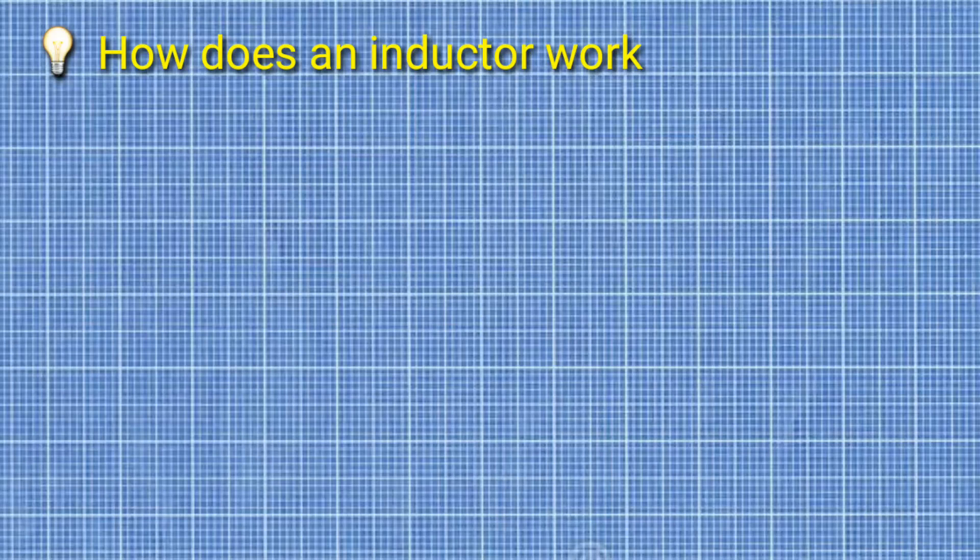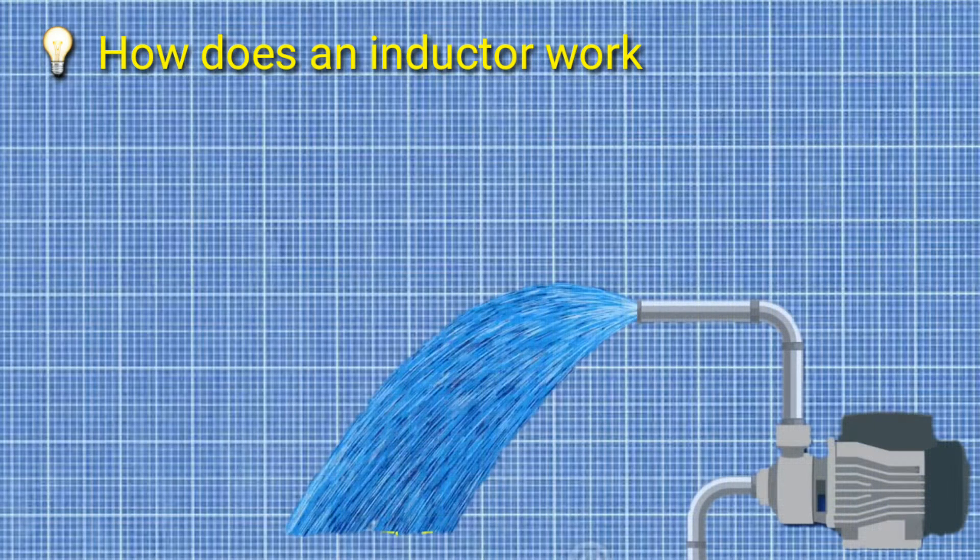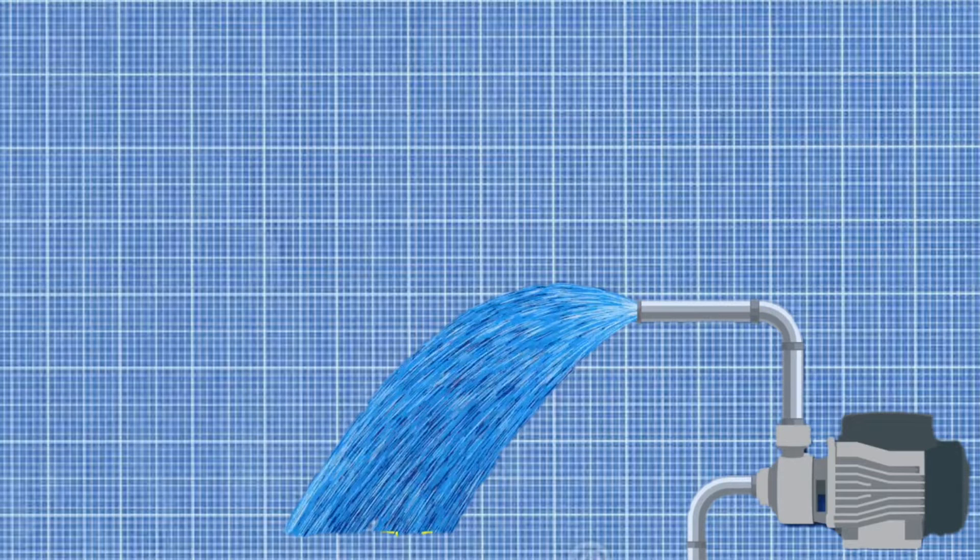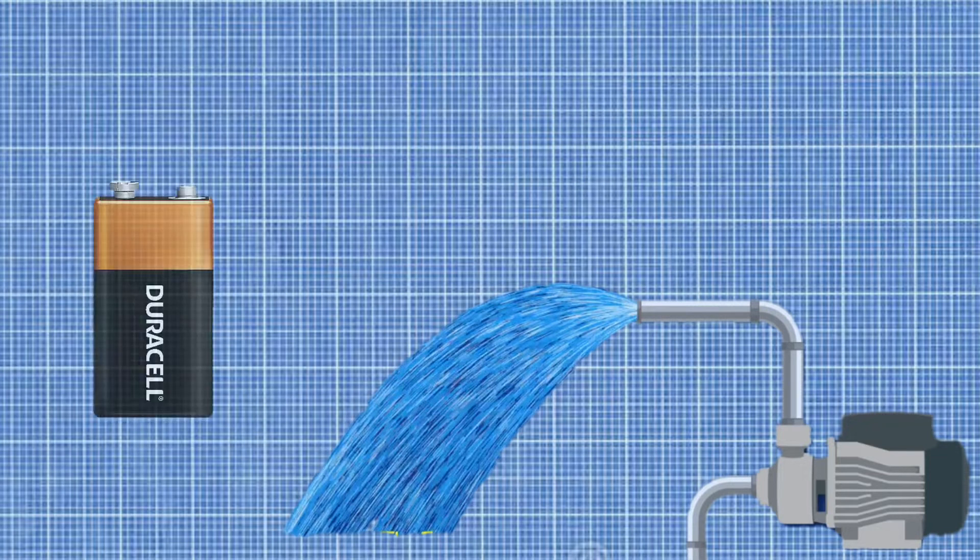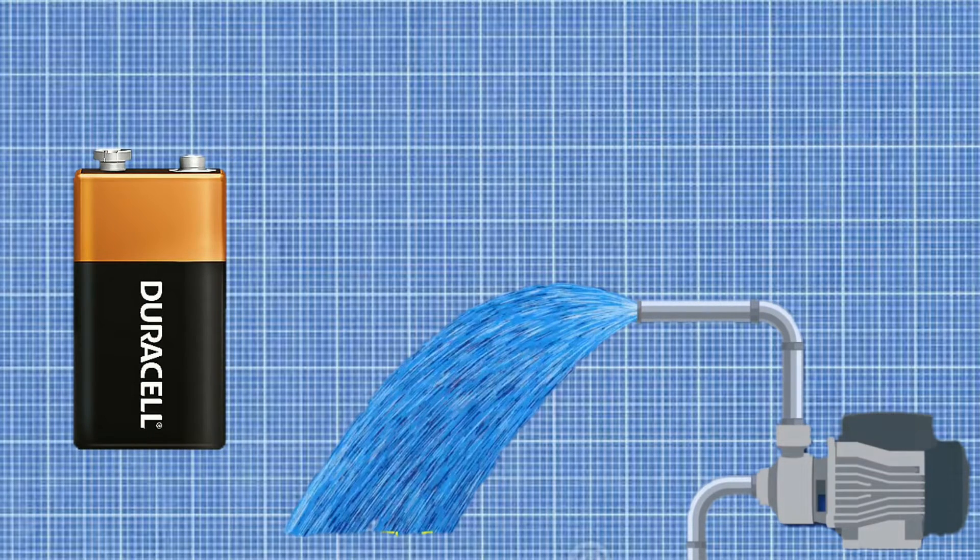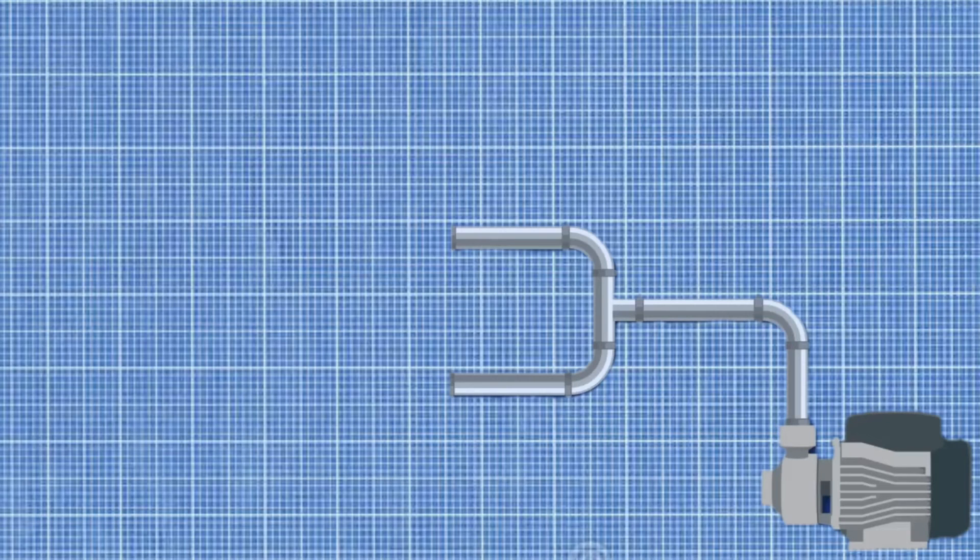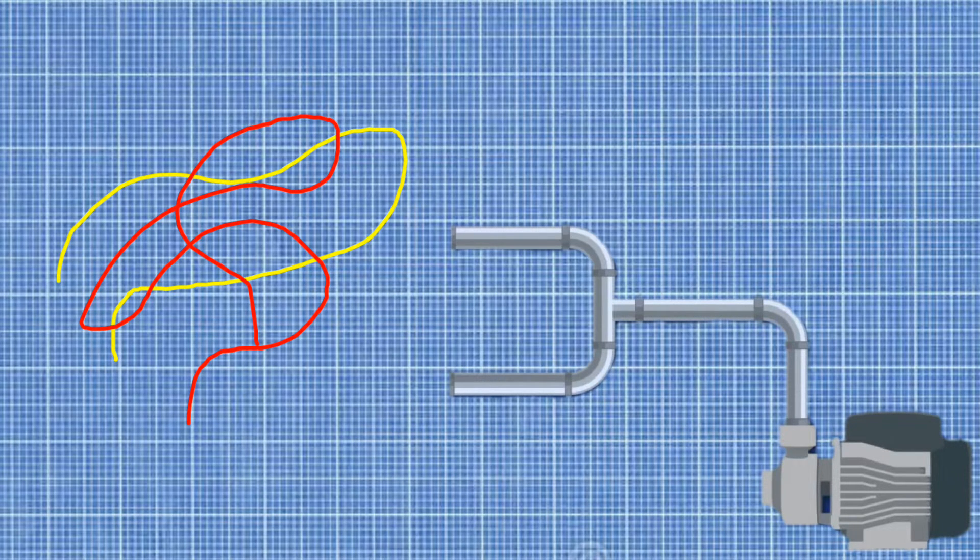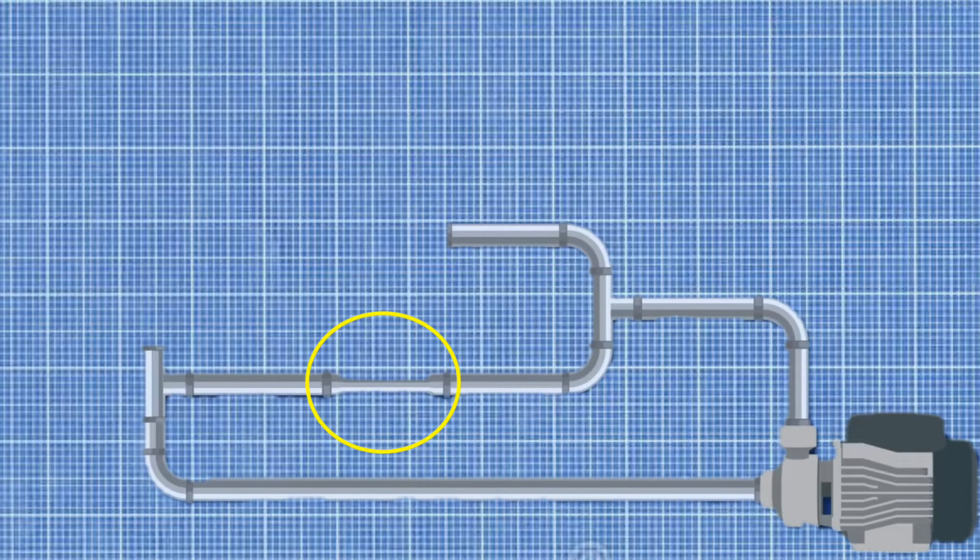So how does an inductor work? Assume there's a pipe with water flowing through it, and there's a pump that pushes the water forward. This pump is equivalent to battery in our circuit. The pipe splits into two branches. This pipe is like wire in circuit. One pipe branch has a reducer which will resist the water flow. This is like resistance in our circuit.